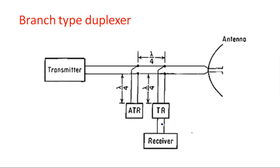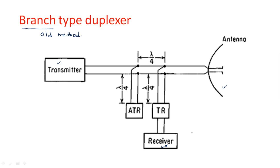In this video I am going to explain the old method of duplexer, that is the branch type duplexer. Looking at the block diagram, you can understand how the branch type duplexer works. Any type of radar communication needs three main blocks: a transmitter, a receiver, and an antenna. The transmitter transmits the signal over long distances, and the receiver processes the signal for further analysis to obtain parameters like range and time.